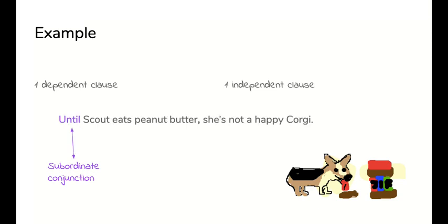Until Scout eats peanut butter, she's not a happy corgi. Again, the subordinate conjunction in purple is indicating that you have a complex sentence. You're starting with that. Because Scout eats peanut butter, her fur is thick and shiny. So there's another one.